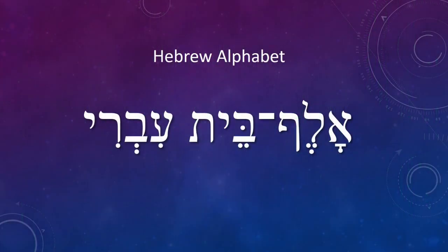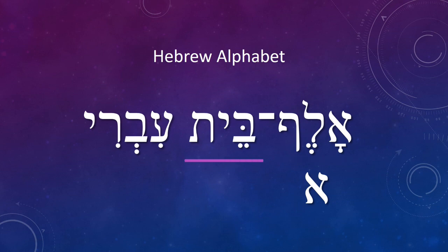The first word in this phrase, Alef-Bayit-Ivri, has the constituent letters Alef-Lamed-Pey that spell and give their energy to the symbol Alef. The second word has the constituent letters Bet-Yod-Tav that form and give their energy to the symbol Bayit.